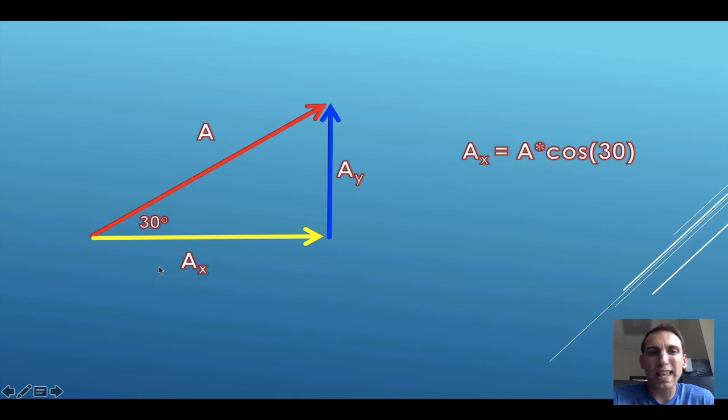So we can find the X component of this vector by using cosine, because remember, we're dealing with hypotenuse and the adjacent side to this angle. So we can just take this hypotenuse times the cosine of 30, and that gives us our X leg. To find the Y leg, it's opposite of the 30 degree angle. So we could take the hypotenuse times the sine of 30, and that gives us our vertical component.